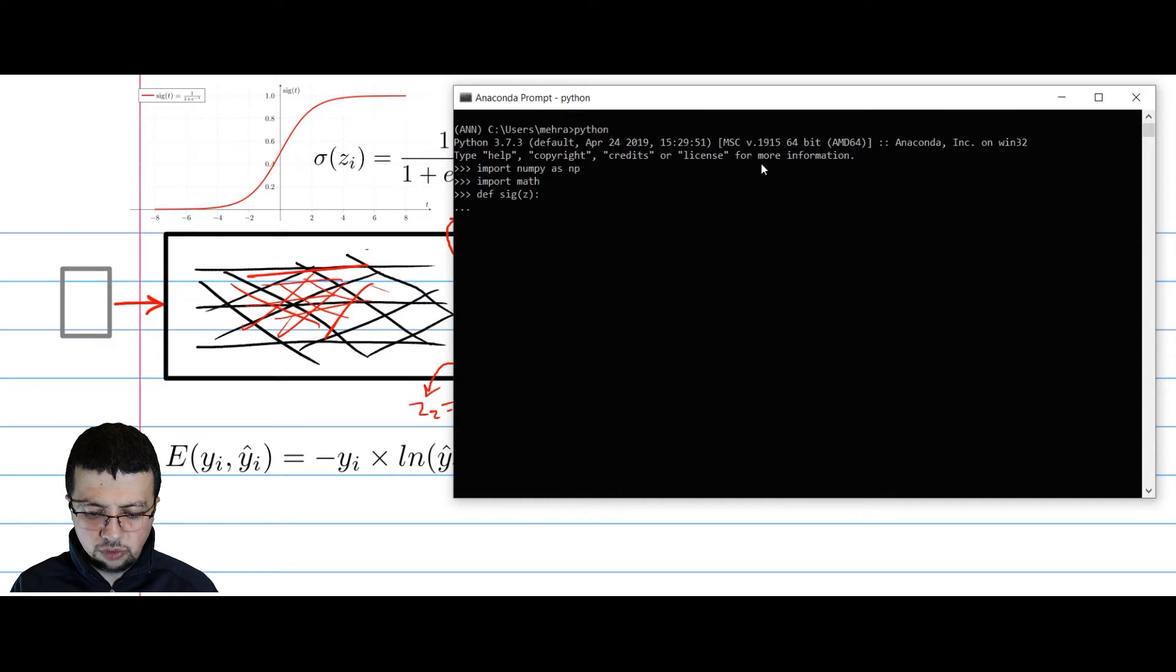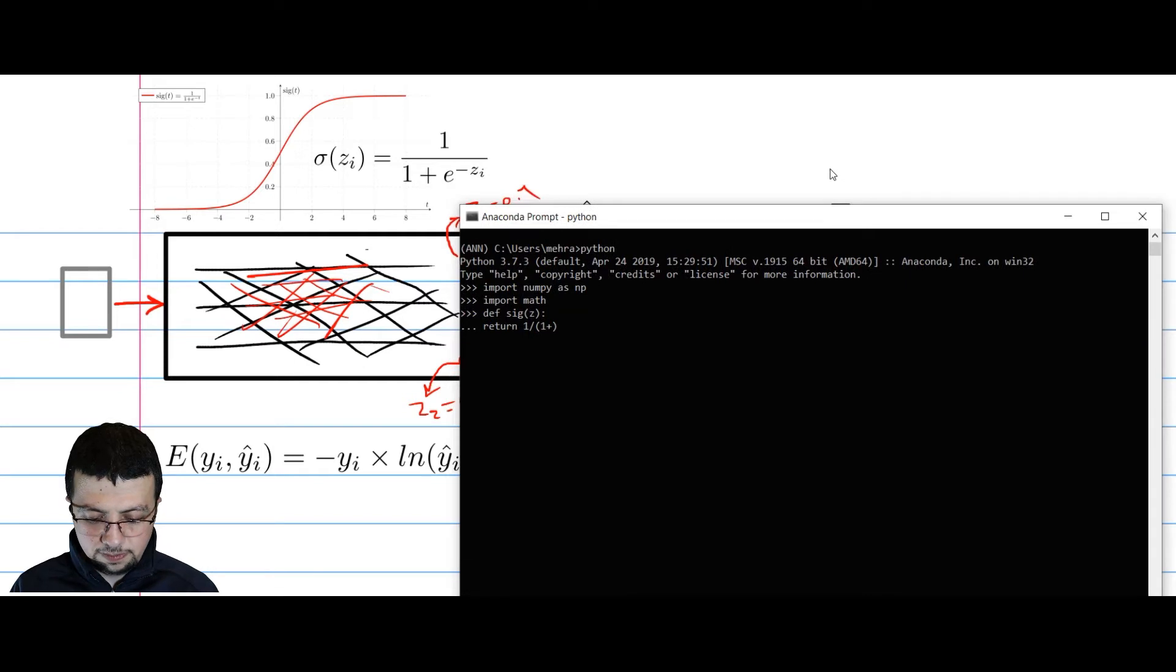Def, let's call it sig of z. I'm going to return the output of this, which is 1 divided by 1 plus, so look at the formula, 1 plus math.exp, which is Euler's number, minus that input. So here the input is z. I had to indent this. Great, so I have the sigmoid function.